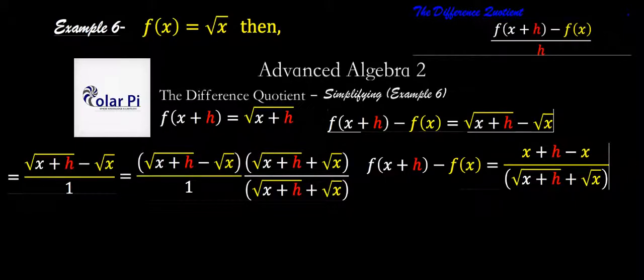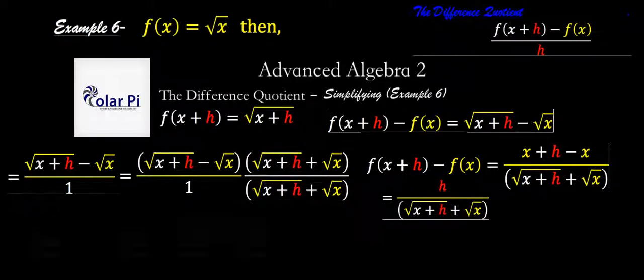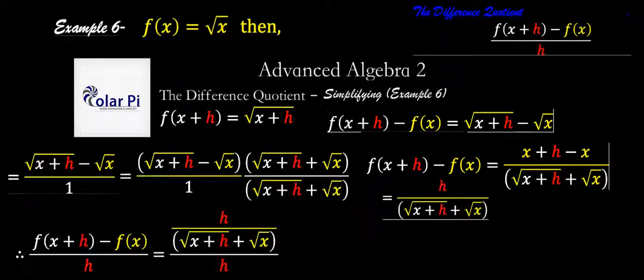And therefore, f of x plus h minus f of x is simply this. And all we have left to do is divide it by h, and then we will have our difference quotient, and then we just have to simplify that. So our difference quotient is taking this, which is f of x plus h minus f of x, right here, which is right here, and then dividing it by h.